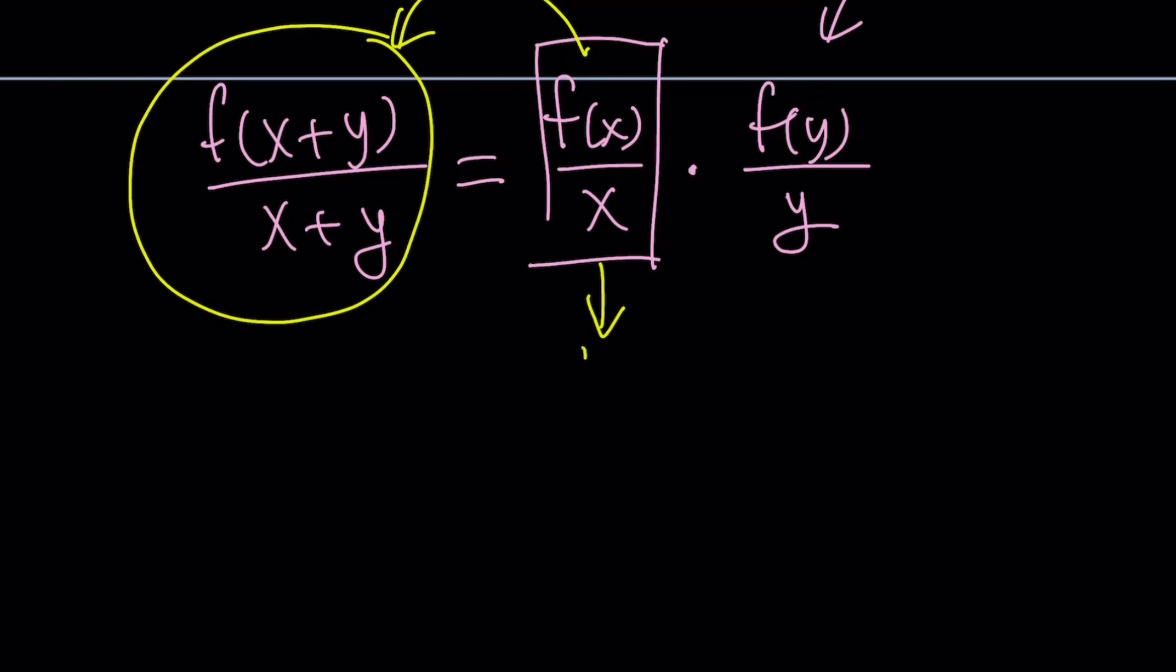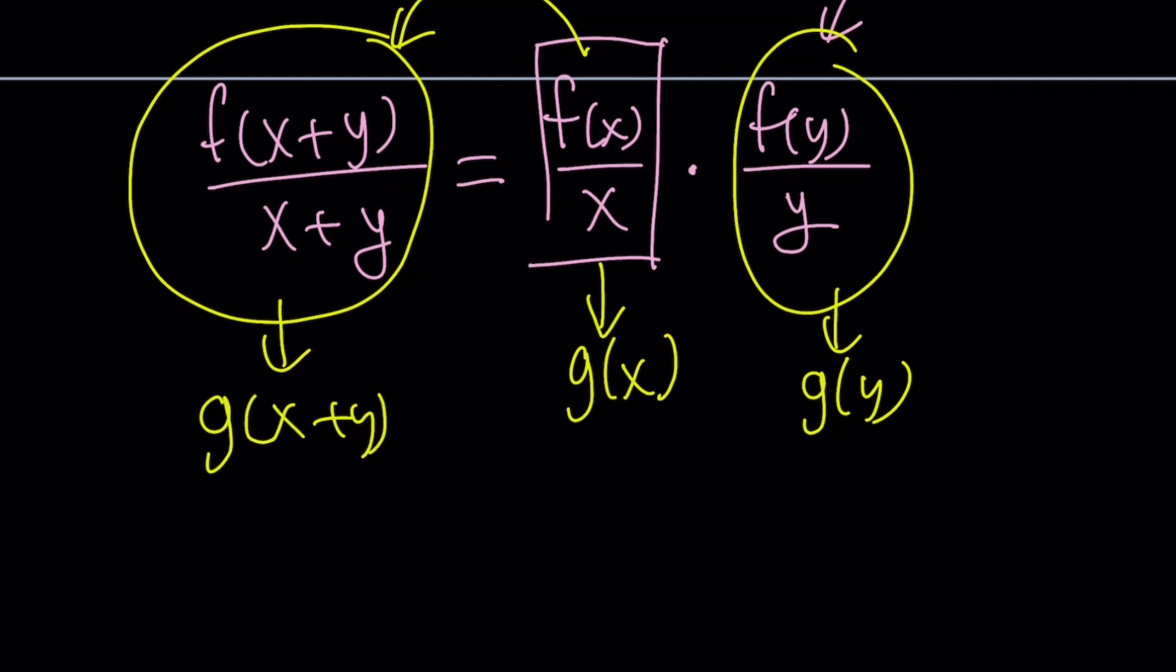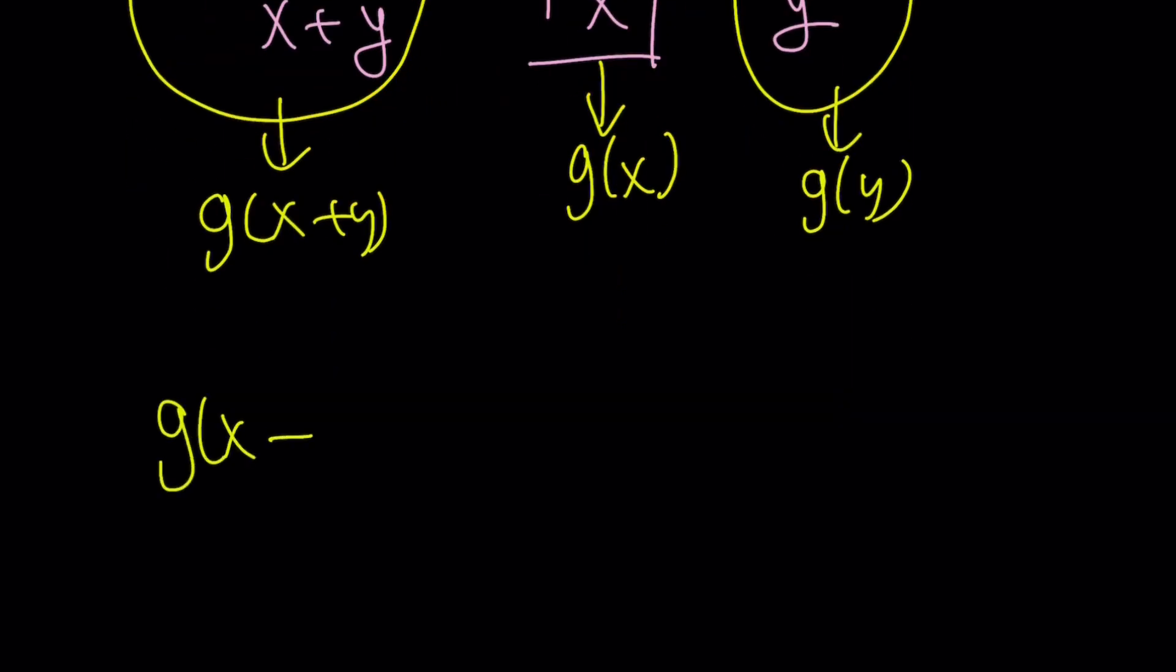Let's replace f(x) over x with g(x). So this means this is going to be g(y) and this is going to be g(x+y). Awesome. This equation is much more simple. But not only that, it also has some special properties. What are those special properties?